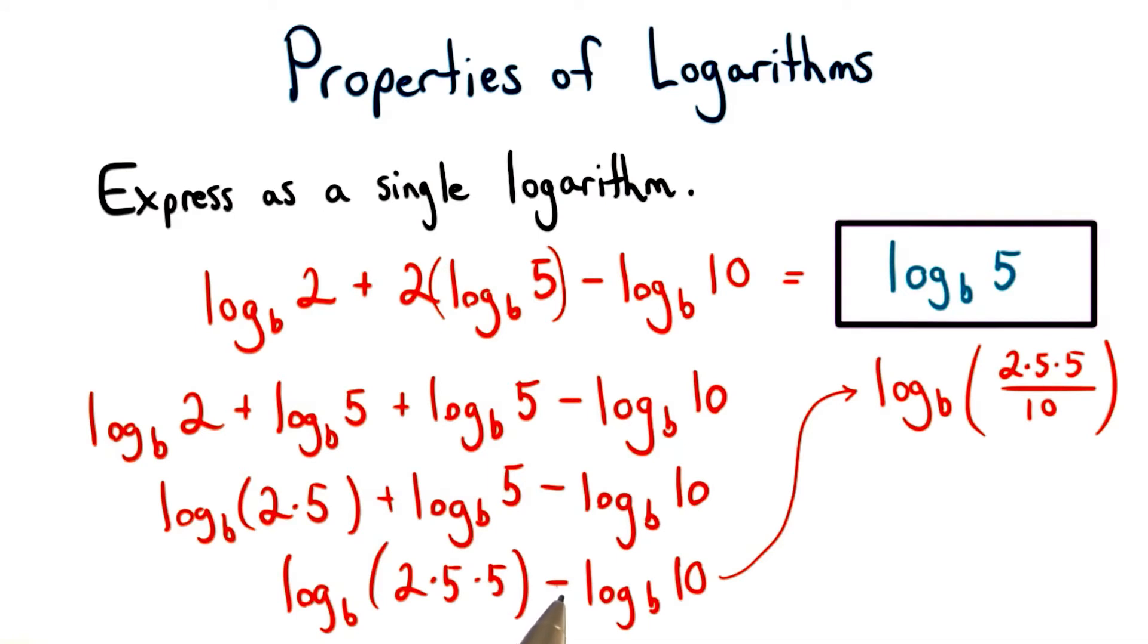Now when we subtract the logarithms, we take this number and divide it by this number. So we'll have log base b of 2 times 5 times 5 divided by 10.